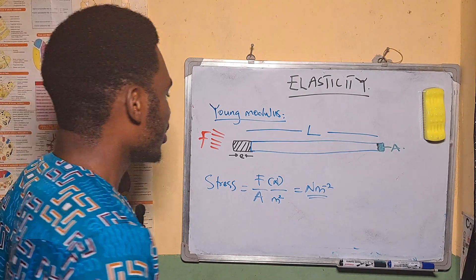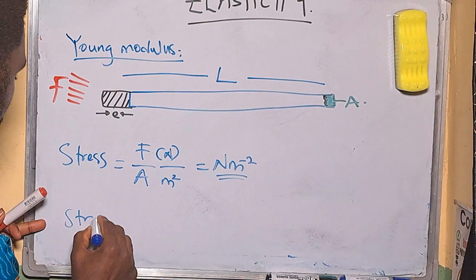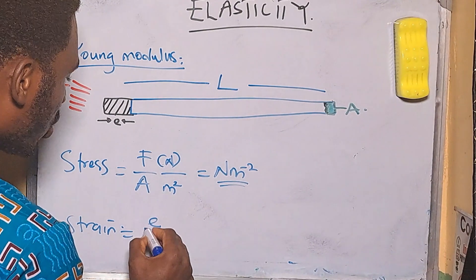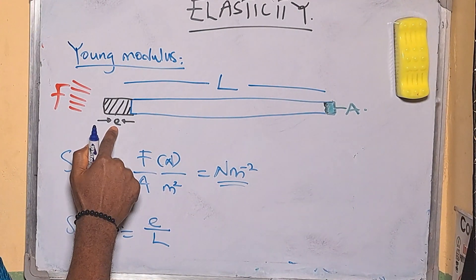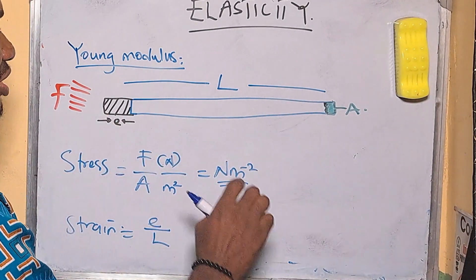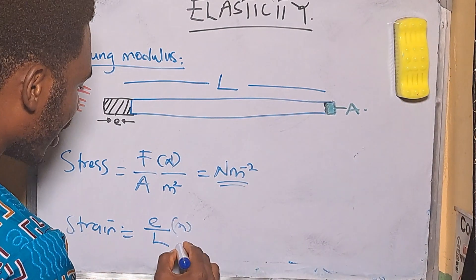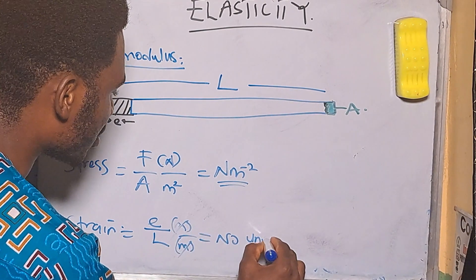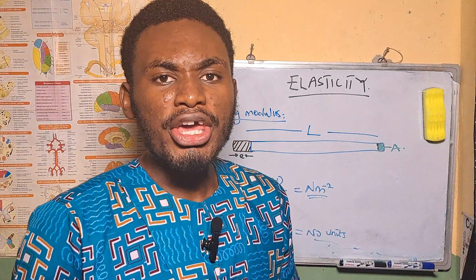There is another parameter called the tensile strain. The tensile strain is the ratio of the extension E to the initial length L — that is, E over L. Since both E and L are in metres, they cancel each other, so strain has no units at all.